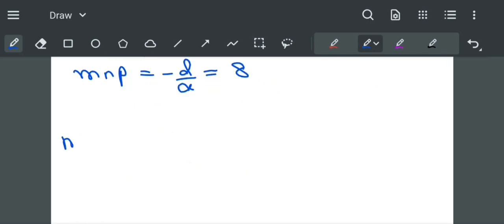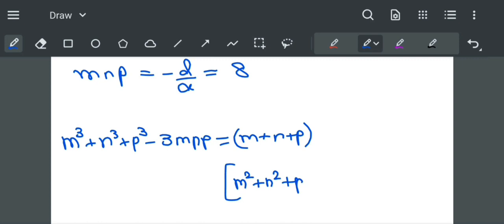By using the identity that m cube plus n cube plus p cube minus 3mnp is equal to m plus n plus p multiplied by m square plus n square plus p square minus mn plus np plus mp.